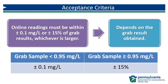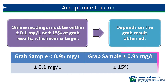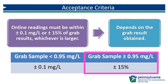A grab result of 0.95 mg per liter is the threshold between the two acceptance criteria. For grab samples less than 0.95 mg per liter, plus or minus 0.1 mg per liter provides a larger range than plus or minus 15%. When the grab sample result is greater than or equal to 0.95 mg per liter, plus or minus 15% is the larger range.